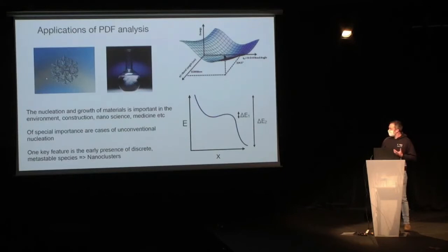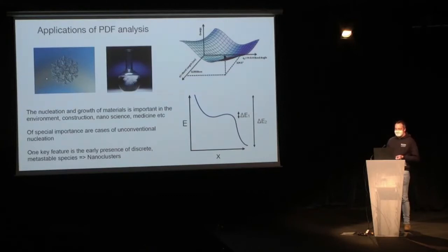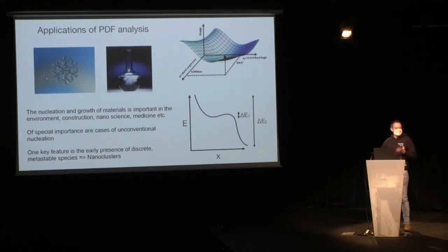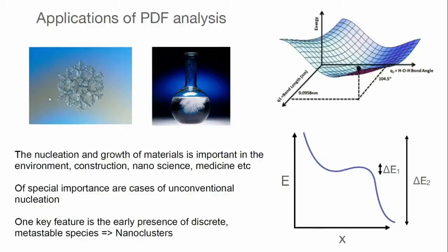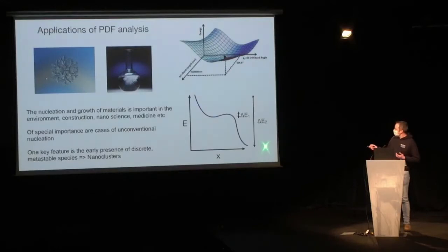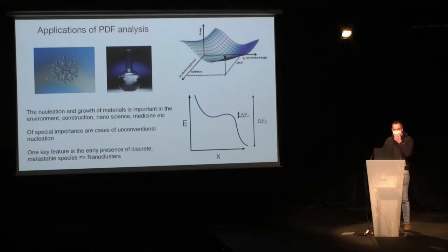It turns out that nucleation and growth is a very important process and in many cases it's very unconventional. What you actually find, especially in nanomaterials, is that these things don't nucleate and grow in one step. You have a very complicated potential energy surface — the different energetic pathways available to the system and their local minima. You start in a high energy state, your solution of cations, and it inexorably goes to a low energy state, whatever product will crystallize. These unconventional processes have local minima with small energetic barriers that kinetically trap metastable phases, and those are often nanoclusters — one of the great questions is what's the role of these in growth.